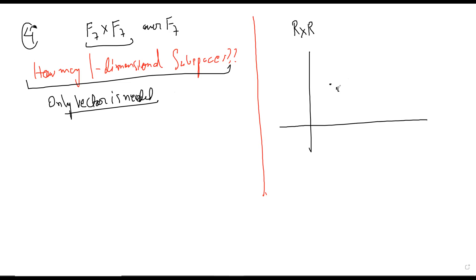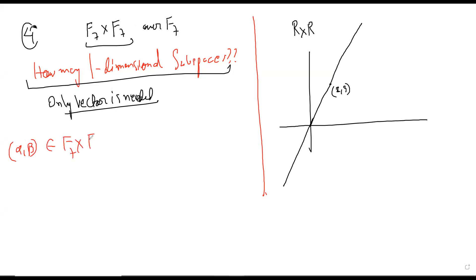In R², in the case of R, there are uncountably many. But let's say we have the vector (2, 3) — then with that vector you can get this line, and that's a subspace. You take some other vector, you get another one-dimensional subspace. In the F₇ × F₇ case, you take any alpha comma beta in your space, and then you take all multiples of alpha comma beta — the subspace generated by (α, β). That's a one-dimensional subspace.